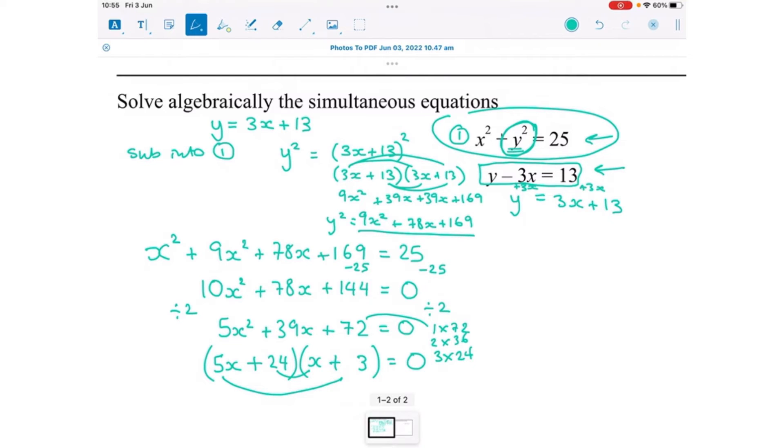And to make that equal 0, either 5x add 24 needs to equal 0. So 5x is minus 24 and x is minus 24 divided by 5 which is minus 4.8. And then for the other bracket, x just equals minus 3. So x number 1 is minus 4.8 and x number 2 is minus 3.